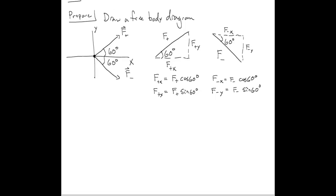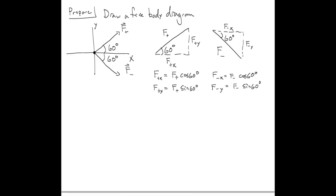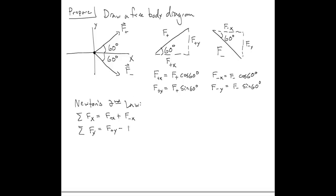Now we've drawn our triangles and our free body diagram. The next step when we have a force problem is to write down Newton's second law. The sum of the forces in the X direction includes F+X in the positive X direction and F-X also in the positive X direction. In the Y direction, we have F+Y in the positive Y direction, but the Y component of F- is actually pointing down, so it's minus F-Y.